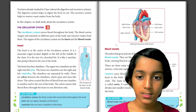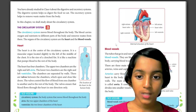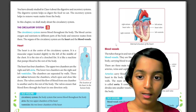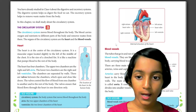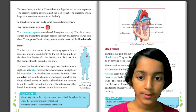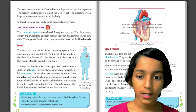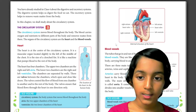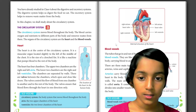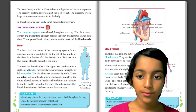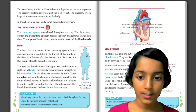The upper two chambers are the right and left atria. The lower two chambers are the right and left ventricles. The chambers are separated by walls. There are valves between the chambers, which open and close like doors. The valves control the flow of blood from one chamber to another and to the rest of the body, ensuring that blood flows through the heart in one direction only.